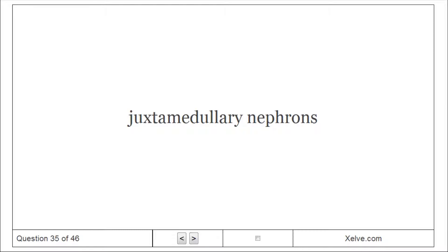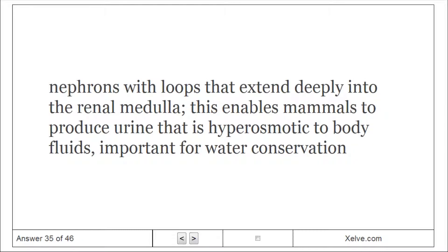Juxtamedullary nephrons: Nephrons with loops that extend deeply into the renal medulla. This enables mammals to produce urine that is hyperosmotic to body fluids, important for water conservation.